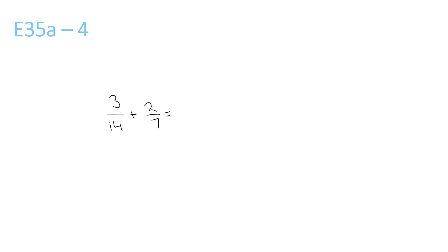14 and 7 both go into 14. 3 over 14 can be kept the same as it's already over 14. But 2 over 7, 7 times 2 is 14, so 2 times 2 is 4 over 14. Equals 3 plus 4 is 7 over 14. Now the top and bottom can be divided by 7. 7 divided by 7 is 1, 14 divided by 7 is 2. So it's a half.